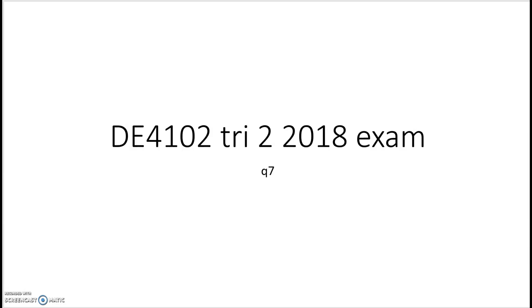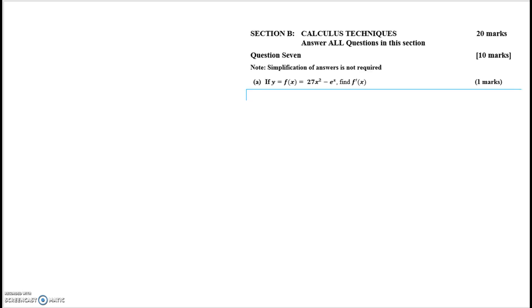Hi there, this is Penelope. This is question 7 of the D4102 Trimester 2 2018 exam. It's the first of the calculus techniques questions. Section B is worth 20 marks. Both questions in the section are compulsory and each of them is worth 10 marks. Just note that for all of these, simplification is not required.